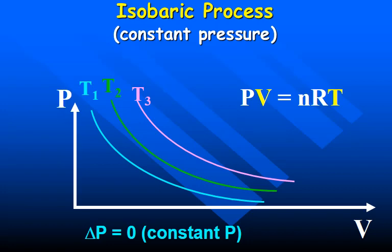An isobaric process is where you have a constant pressure. In this example, the volume is increasing from one point to another while the pressure stays the same, showing that relationship.